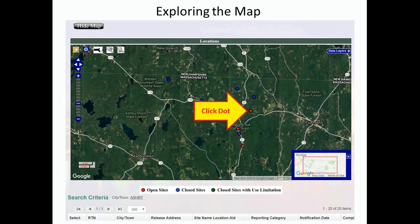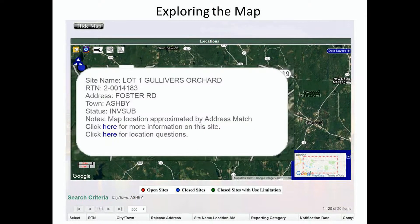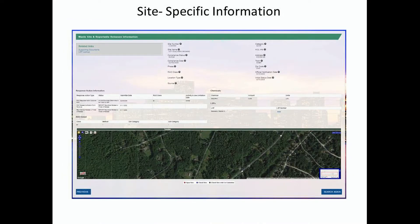Back in the map, if you actually click on a dot, you'll get information about that particular site — basic information like the site name, the release tracking number, the address, etc. There's also a link at the bottom for more information about that site. Click there and you'll get the site's information summary page. We'll come back to that in a moment.